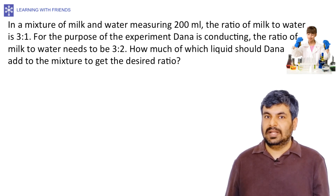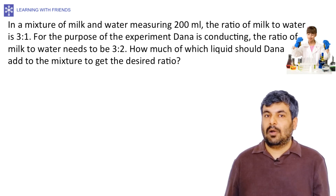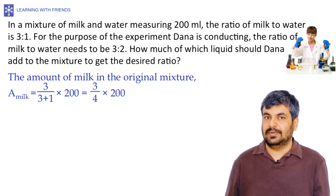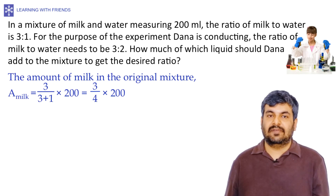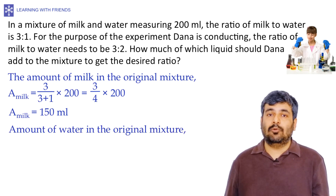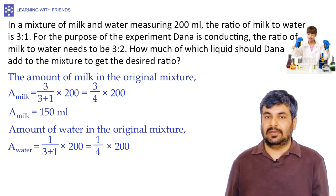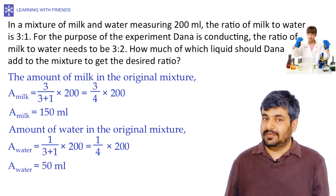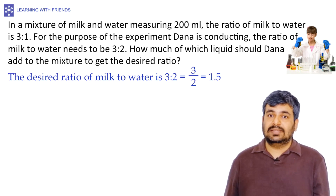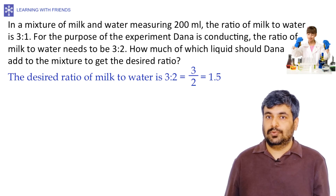First, we find the amount of milk and water in the original mixture. Since the ratio of milk to water is 3:1, the amount of milk is (3/4) × 200 = 150 ml, and the amount of water is (1/4) × 200 = 50 ml. The desired ratio of milk to water is 3:2, which equals 1.5.